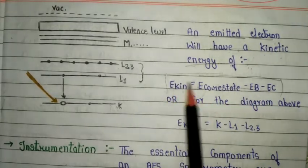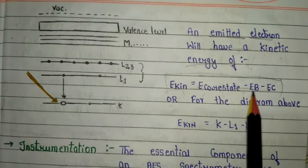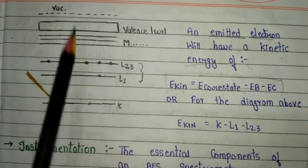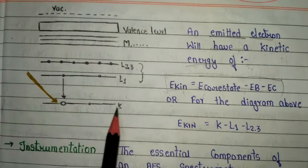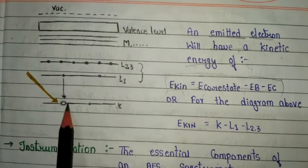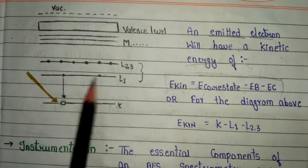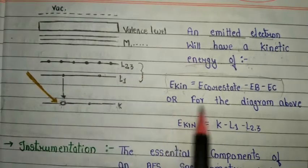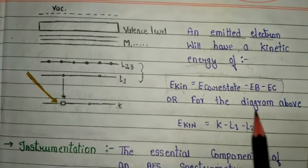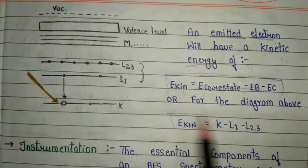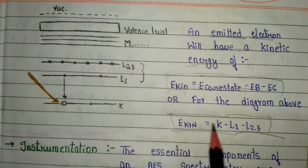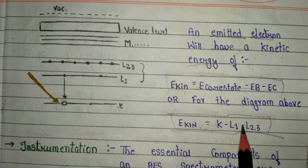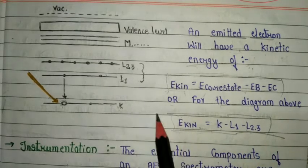The kinetic energy of the emitted Auger electron can be found from the formula: E(kinetic) = E(core state) − E_B − E_C. From the diagram, with K shell as the inner shell and L1, L2, L3 shells, the formula becomes: E(kinetic) = K − L1 − L2,3. This is the main kinetic energy formula.